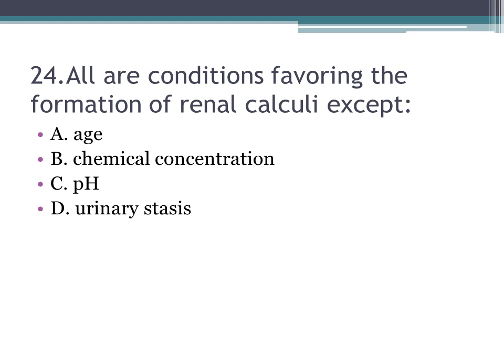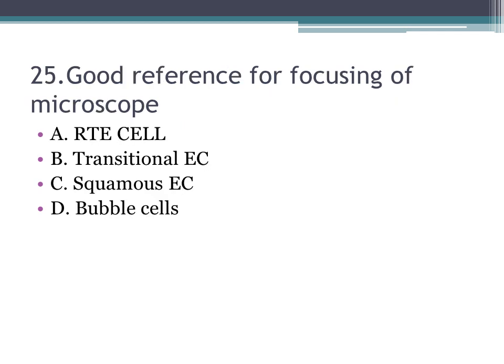Number twenty-four: all are conditions favoring the formation of renal calculi except — A. age, B. chemical concentration, C. pH, D. urinary stasis. The correct answer is A, age.